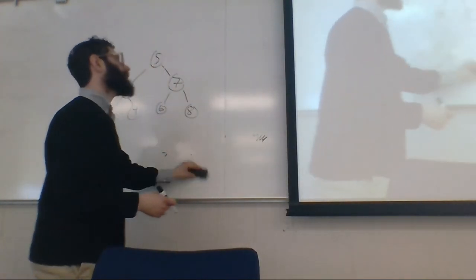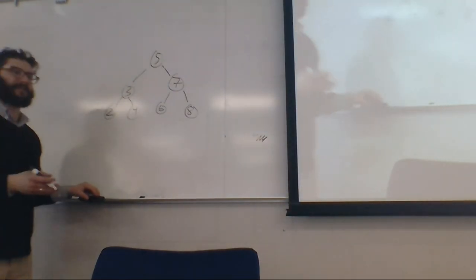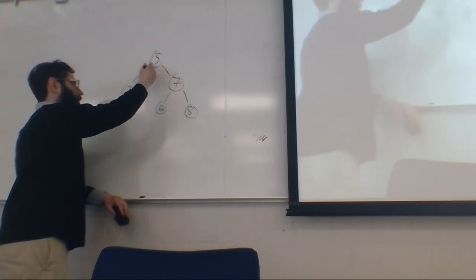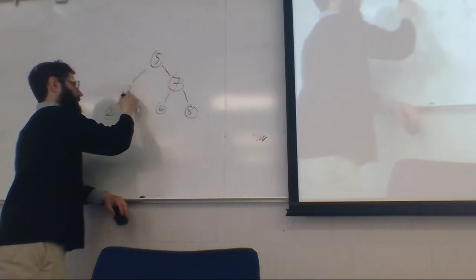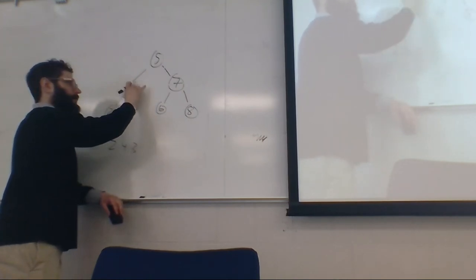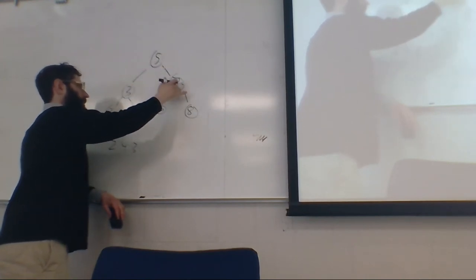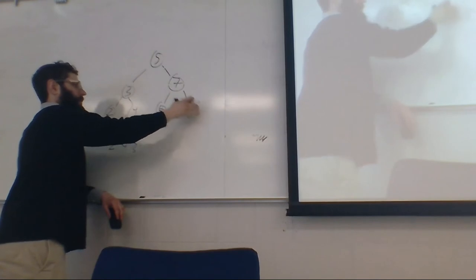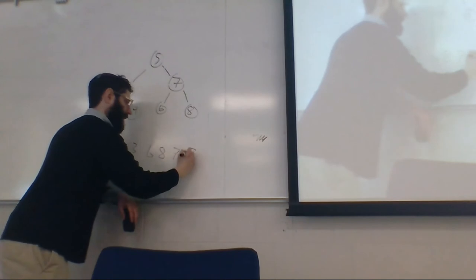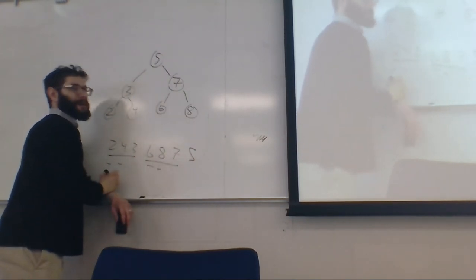Post-order: I'll visit myself last — do my left side, then my right side, then myself. So five says 'do my left' — three says 'do my left, my right, then myself': two, four, three. Then five does its right side — seven says 'do my left, right, then myself': six, eight, seven. Then finally five prints itself. So the post-order result is: 2, 4, 3, 6, 8, 7, 5.